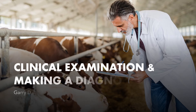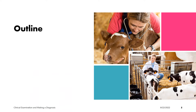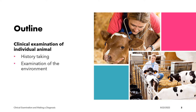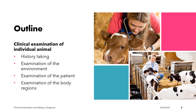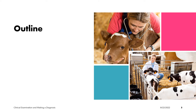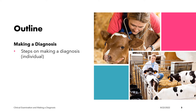Welcome to our lecture on clinical examination and making a diagnosis. The first part of the chapter will talk about the clinical examination of the individual animal, covering topics including history taking, examination of the environment, and examination of the patient. The second part will talk about making a diagnosis, including the steps on making a diagnosis on an individual animal and on a herd of animals.